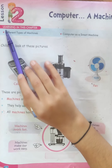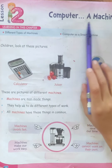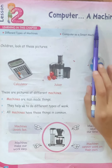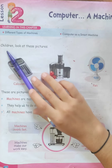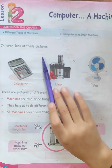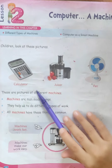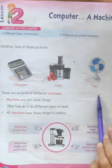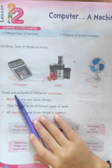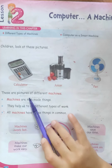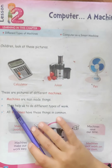Now I will teach you many things about the computer. Lesson 2: Computer — A Machine. Children, look at these pictures: calculator, fan. These are pictures of different machines.